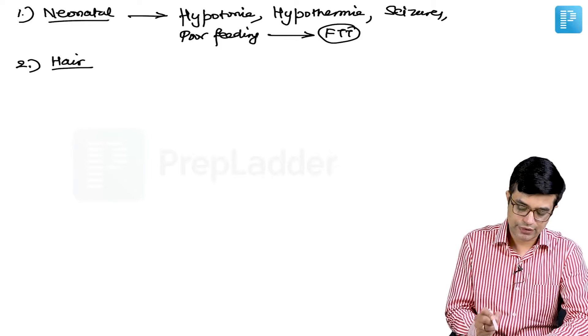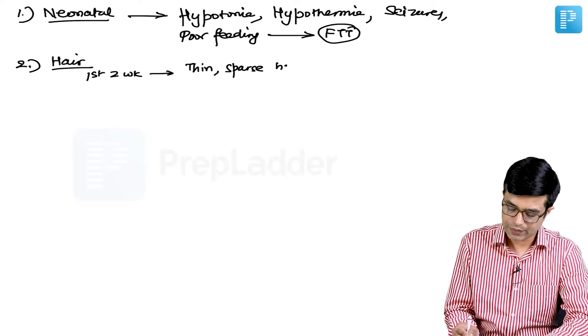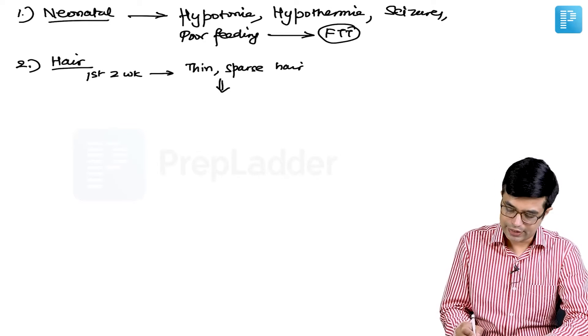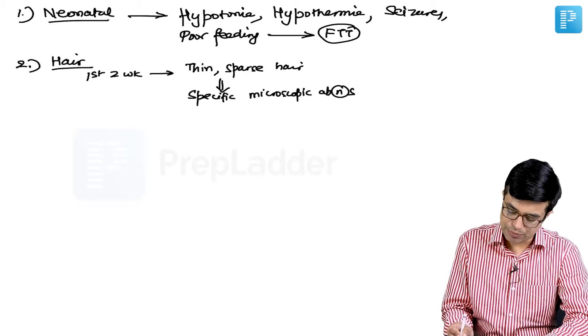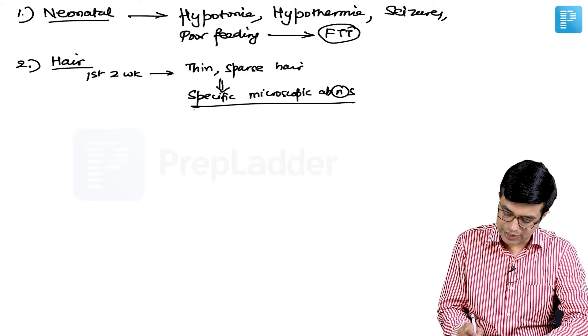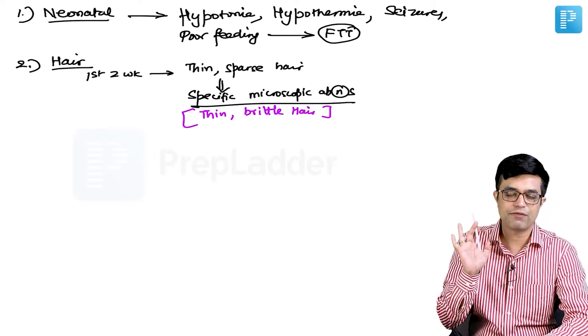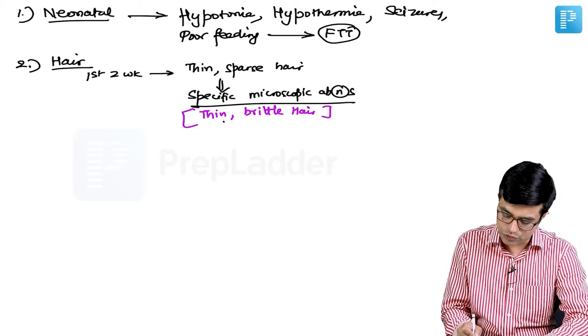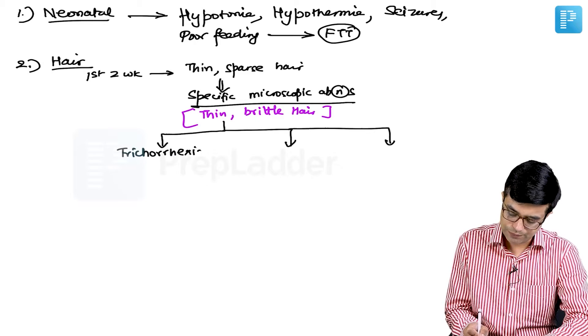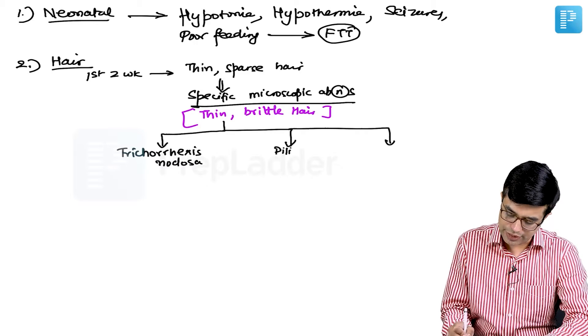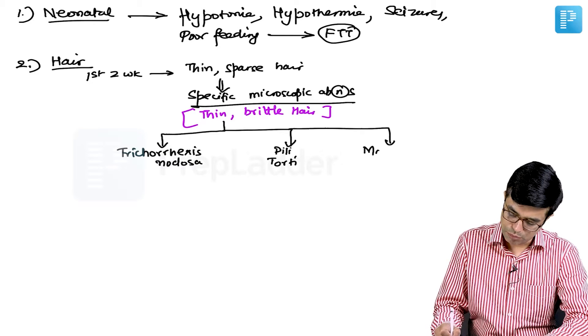Secondly, you will find that there are hair abnormalities. In the first two weeks of life you will only find thin, sparse hair. Later on you will find that there are specific microscopic abnormalities which appear in these individuals. All these microscopic abnormalities will be characterized by thin, brittle hair, but the microscopic pattern will be different in all three entities. You will have three microscopic abnormalities. First is trichorexis nodosa, second is pili torti, and the third is monilithrix.